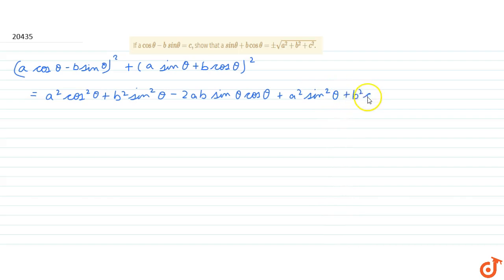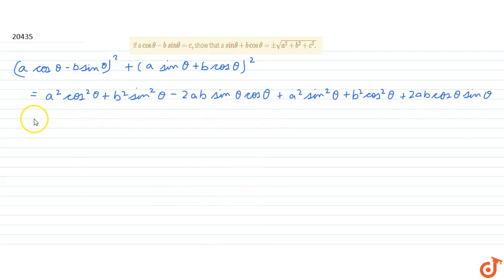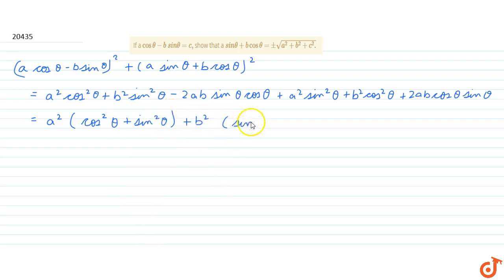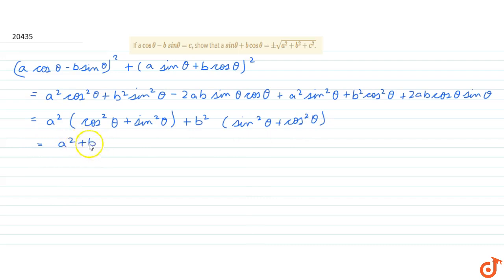Plus b square cos square theta plus 2ab cos theta sin theta. Now, 2ab cos theta sin theta and minus 2ab sin theta cos theta will cancel out, and we are left with a square times (cos square theta plus sin square theta) plus b square times (sin square theta plus cos square theta). Since sin square theta plus cos square theta equals 1, we get a square plus b square.